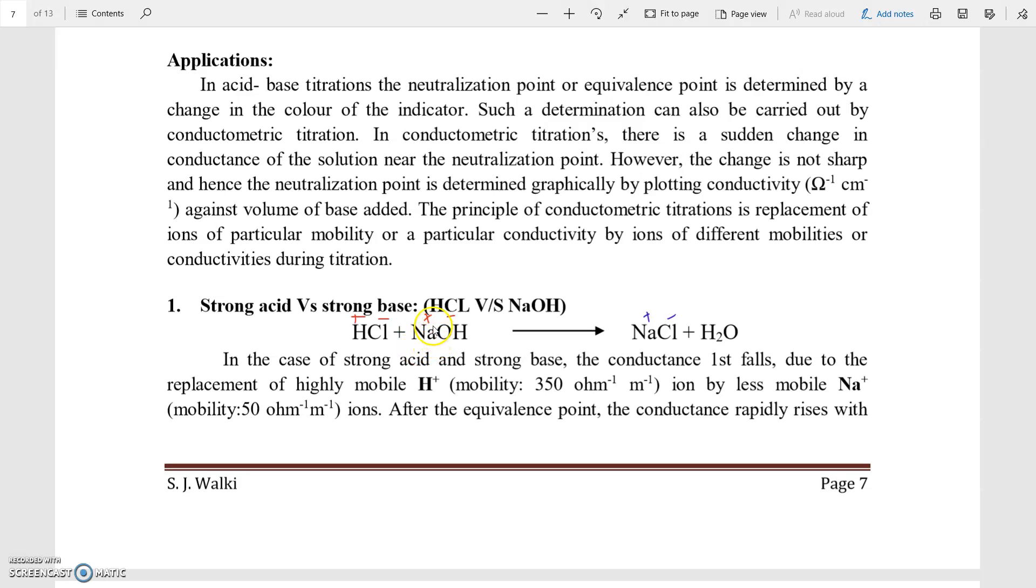That time, the Na plus ions from the burette solution is going to react with Cl minus ions present in the solution and it is going to give rise to NaCl salt. This NaCl salt is electrolyte and it will dissociate, it will exist in the form of Na plus and Cl minus ion. Here, highly mobilized H plus ion is replaced by low mobilized Na plus ion.